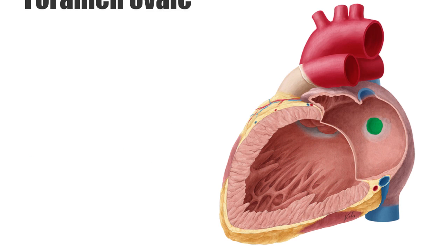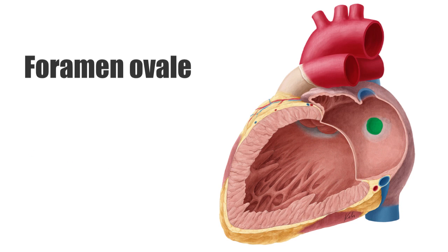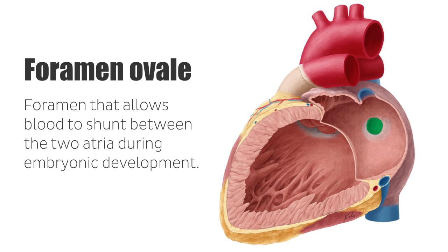The main anatomical structure of note is the foramen ovale, which is a foramen within the atrial walls that allows blood to shunt between the two atria during embryonic development. Normally, around the time of birth, this hole in the cardiac wall closes. Otherwise, it is known as a congenital heart defect named patent ductus arteriosus. It is not, however, generally problematic in child or adulthood.